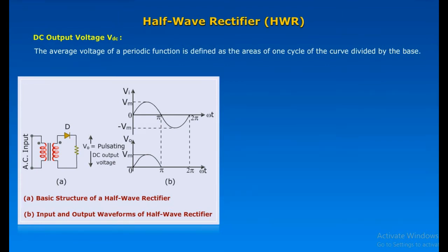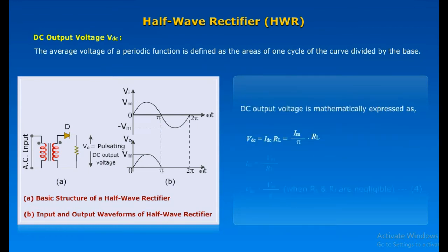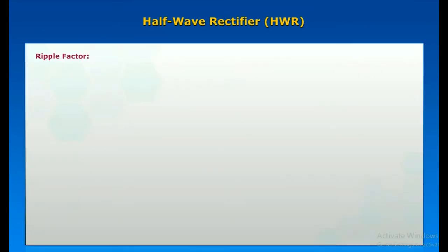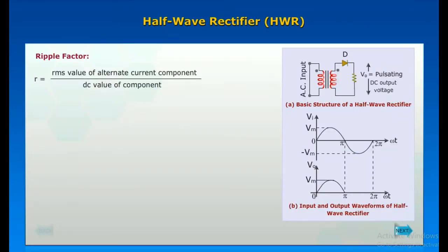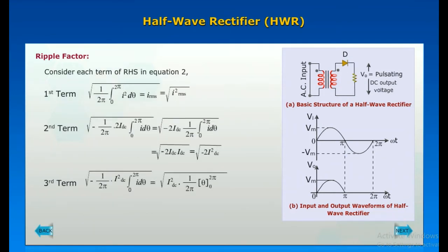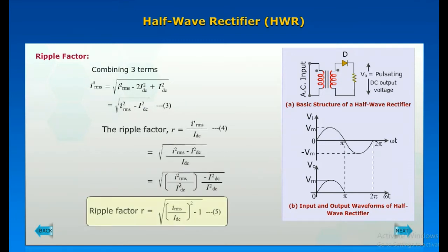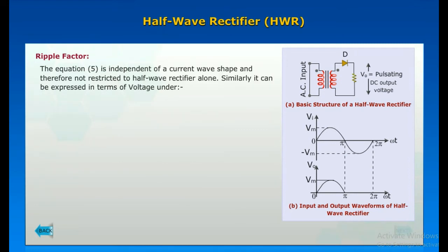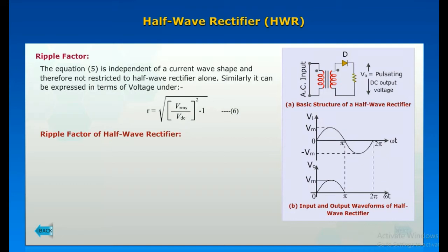Half-Wave Rectifier DC Output Voltage VDC: The average voltage of a periodic function is defined as the area of one cycle of the curve divided by the base. DC output voltage is mathematically expressed accordingly. Ripple Factor R is the ratio of the RMS value of the AC component to the DC value of the component. Ripple Factor R is given as shown, and considering each term of the RHS, combining three terms gives an equation independent of current wave shape and therefore not restricted to the half-wave rectifier alone. It can also be expressed in terms of voltage.